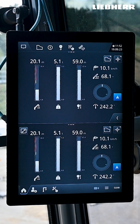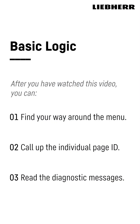In the right bottom corner you can see other icons such as the camera, the quick access menu and the clear button which acknowledges messages and silences audible warning sounds. Now that you have a general idea of the display you will learn to find your way around the menu, call up the individual page ID of each screen and read the diagnostic messages.